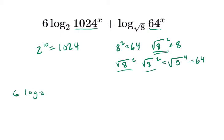6 log base 2 of 2 to the 10th to the x plus log base square root of 8 of the square root of 8 to the 4th of x. Then I've got these two exponents. I can bring those down in the front and multiply. It's a property of logarithms.